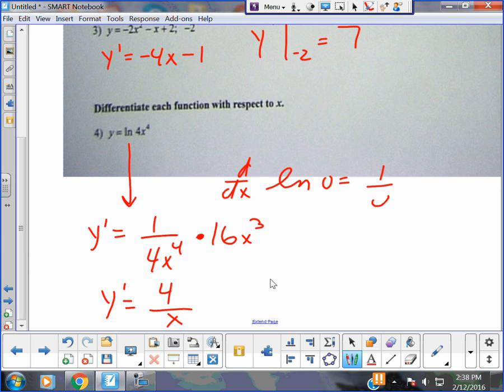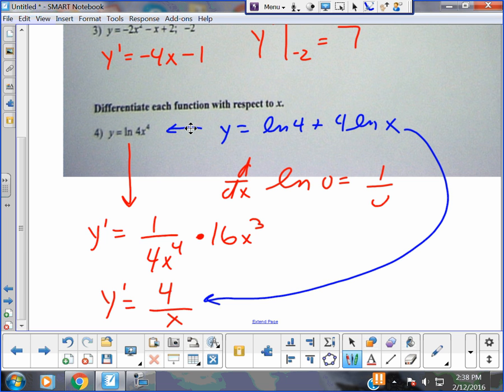Everybody, do you remember your log rules from last year? This could have been written as... I could pull the 4 out if I want. I could write this as ln 4 plus 4 ln x, right. And what's the derivative of ln 4? Ln 4 is a constant, guys, so it's 0. I was going too fast. So anyway, if you do the derivative of the blue, you get the exact same answer as the red. So there's two ways to go at this problem. I personally don't even worry about the rules for logs unless I have to, so I would just take the derivative in red. But the blue derivative is doing log rules first for us.